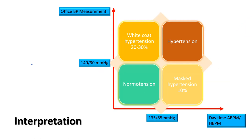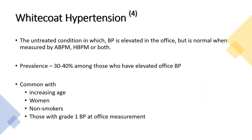When office and out-of-office BP measurements are discordant, we define white coat or masked hypertension. Masked hypertension is when out-of-office BP is high but office BP is normal — about 10% of the population. White coat hypertension is when office BP is always high but home BP is normal — present in 30–40% of those with elevated office BP. White coat hypertension is more common with increasing age, in women, non-smokers, and those with Grade 1 office hypertension.